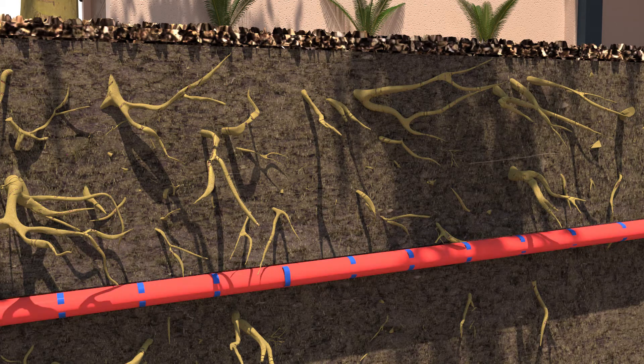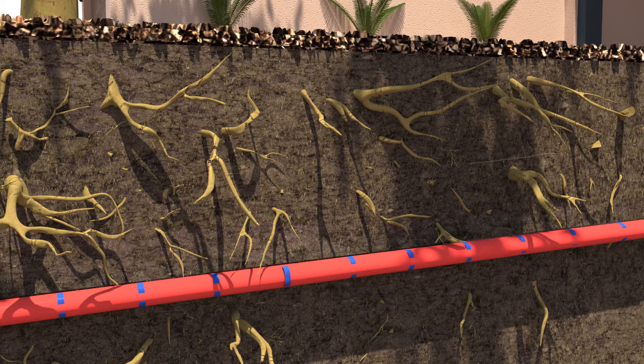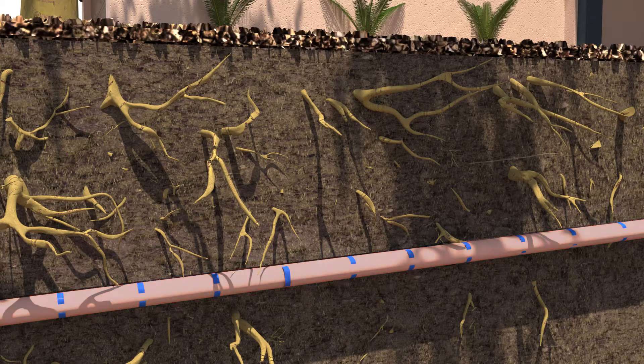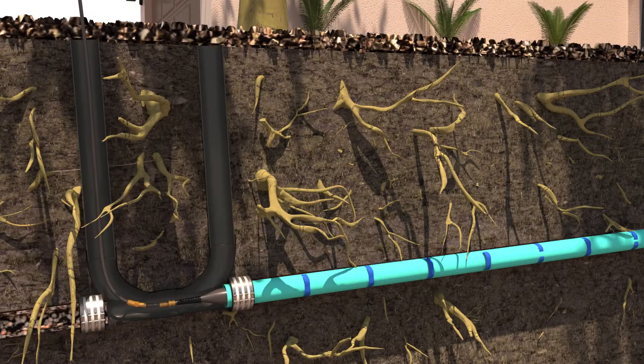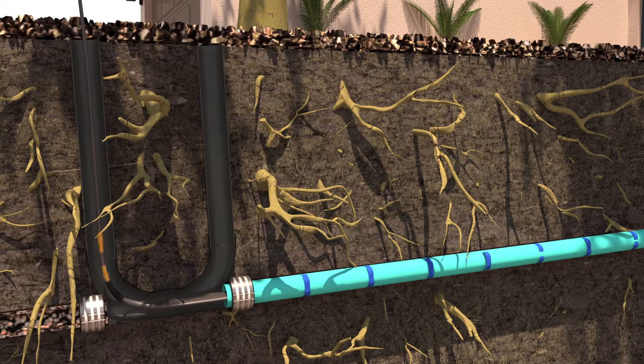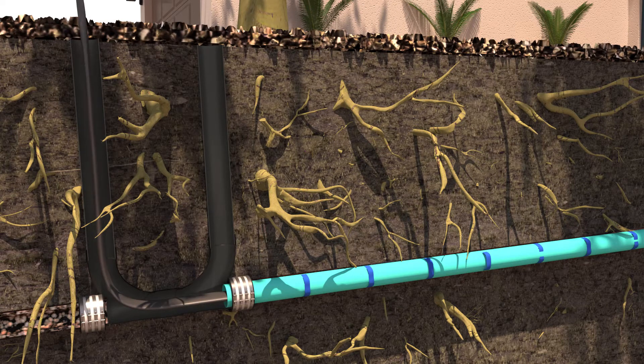The liner is then allowed to cure or harden in place for four to six hours or heat cured for approximately an hour. Once fully cured, the air bladder is deflated and removed, leaving a fully rehabilitated pipeline.